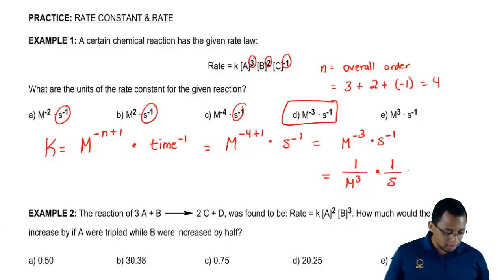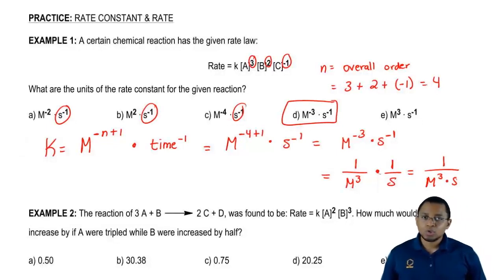Those two are multiplying, so it'd really be 1 over M to the third times seconds. Remember, this is just basic algebra. Inverse really means 1 over whatever that power is.